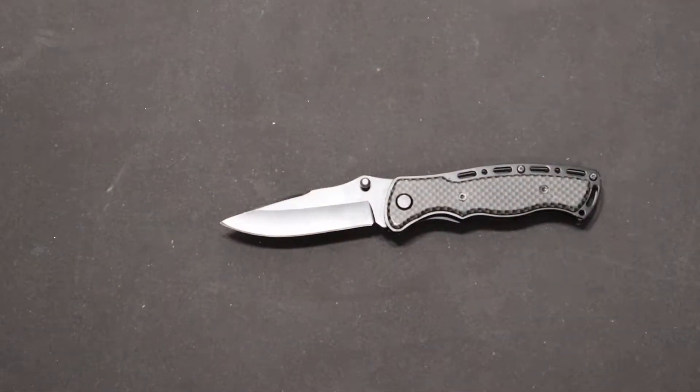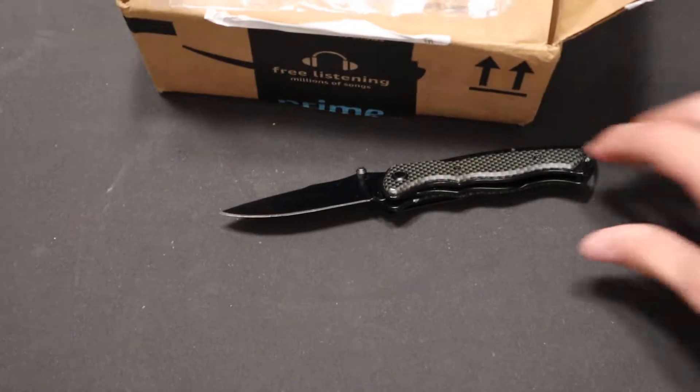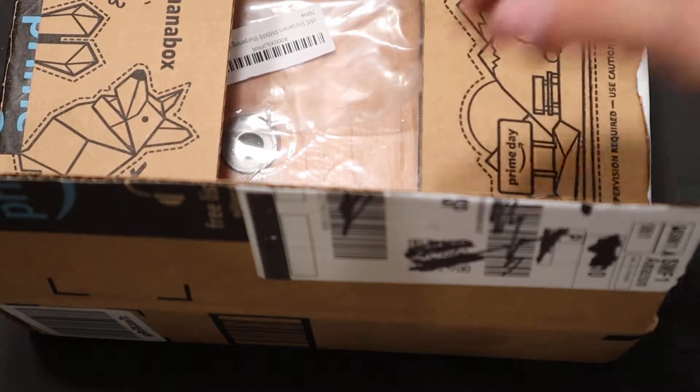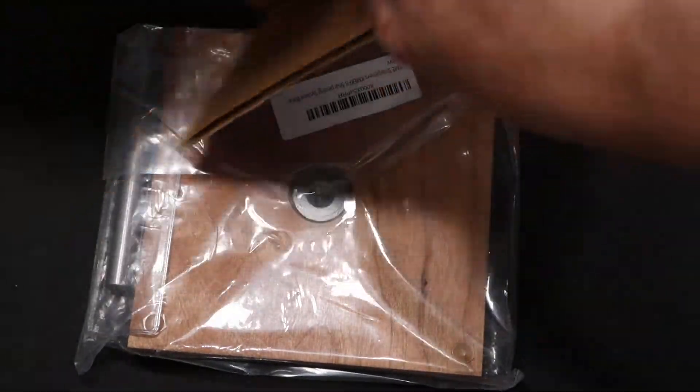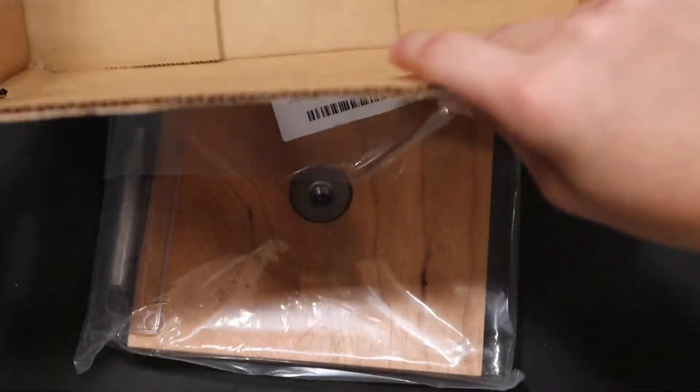So let's put that right there, one more Ozark Trail knife. All right, move that out of the way. So you get bubble wrap and stuff. So in there, there it is, nothing else is in the box.